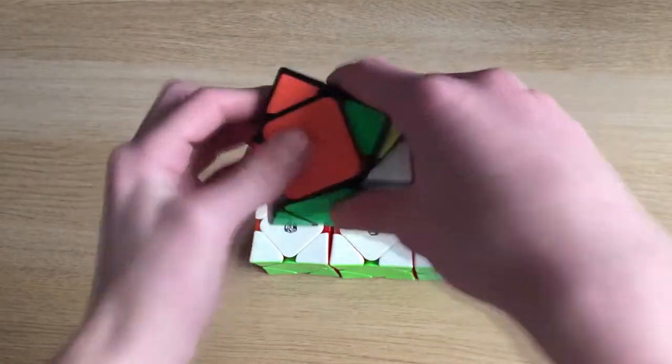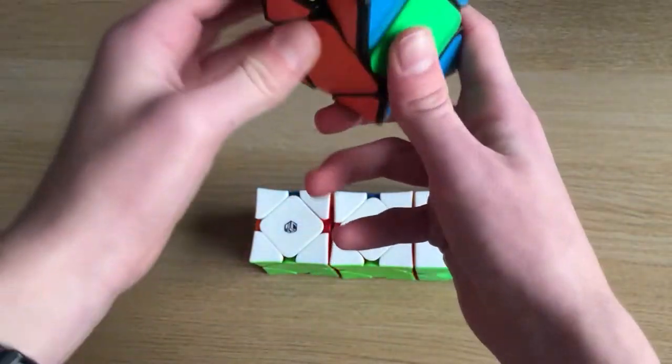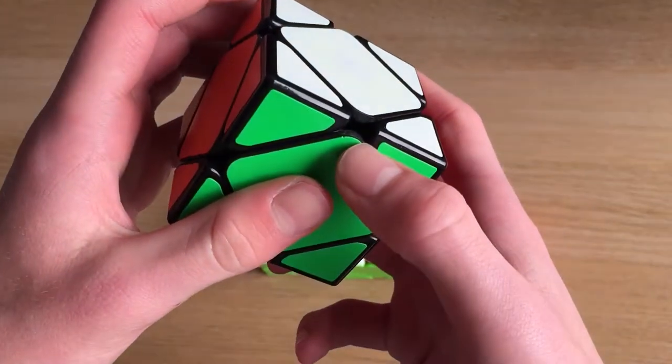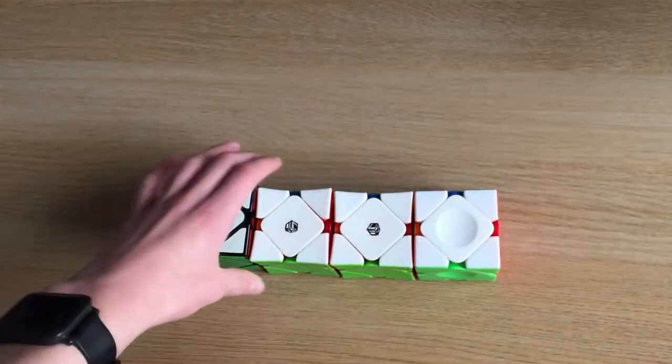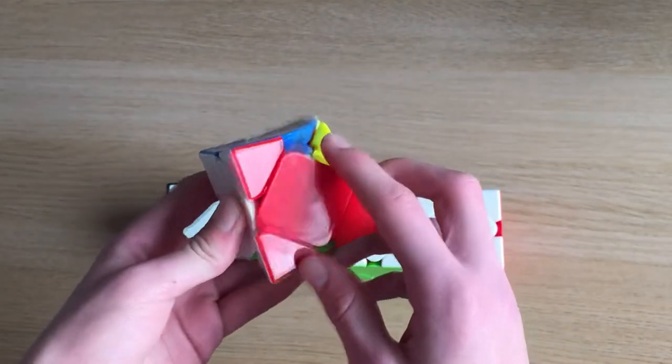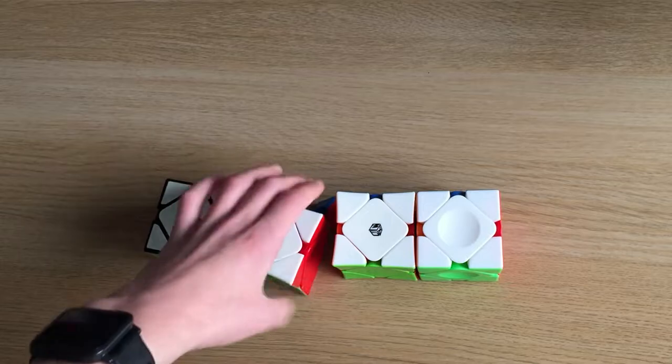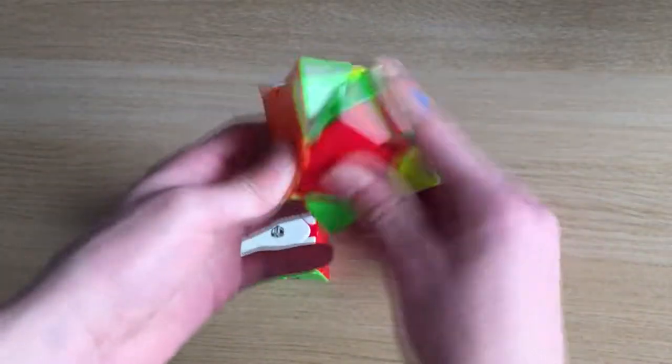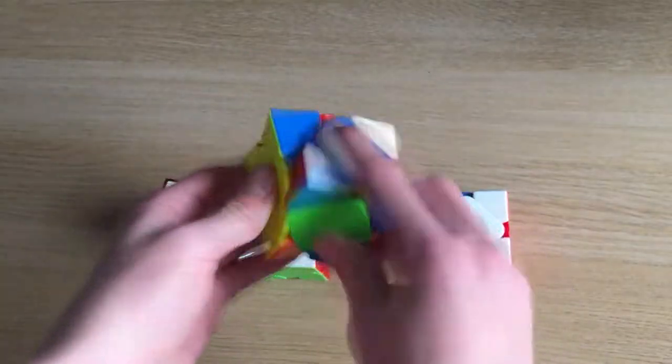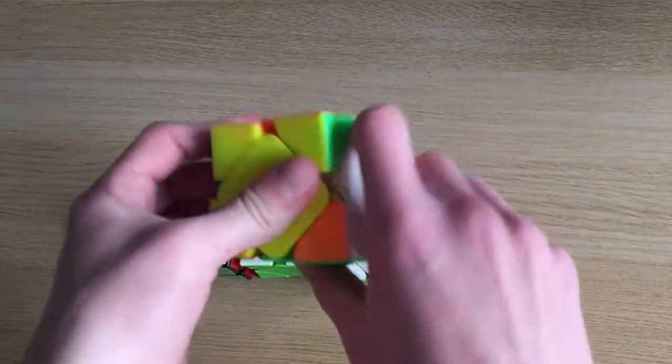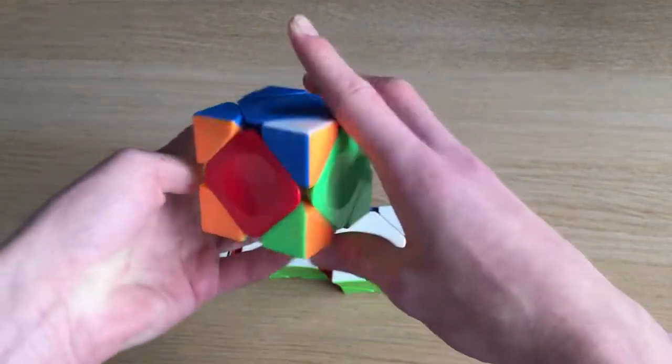Moving on to my Skewbs. My first one was this Moyu, which I have 4R modded, so the corner cutting is slightly better. You can see the holes are slightly bigger there. Here we have an X-Man Wingy cube, where the corner broke off it. I used it as my main for quite a while before the corner broke. And we have another X-Man Wingy, which I used as my main for a little bit. It's an okay cube. And here we have the AoYan, which is my current main.